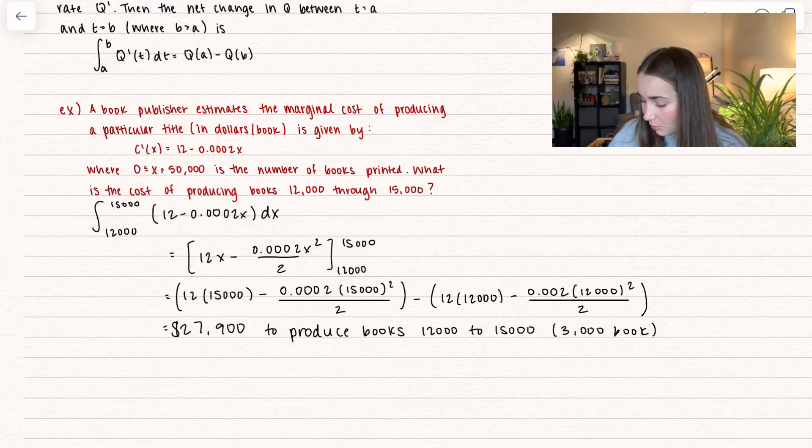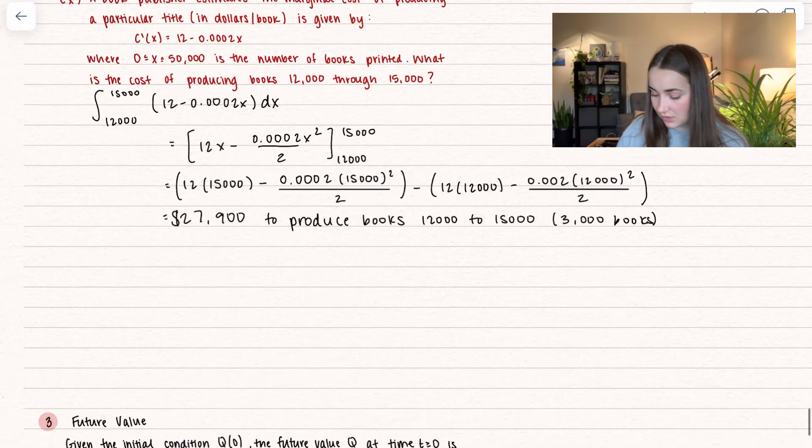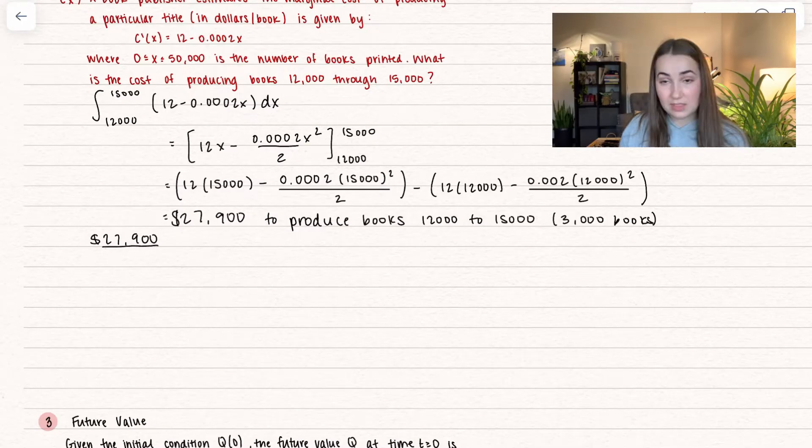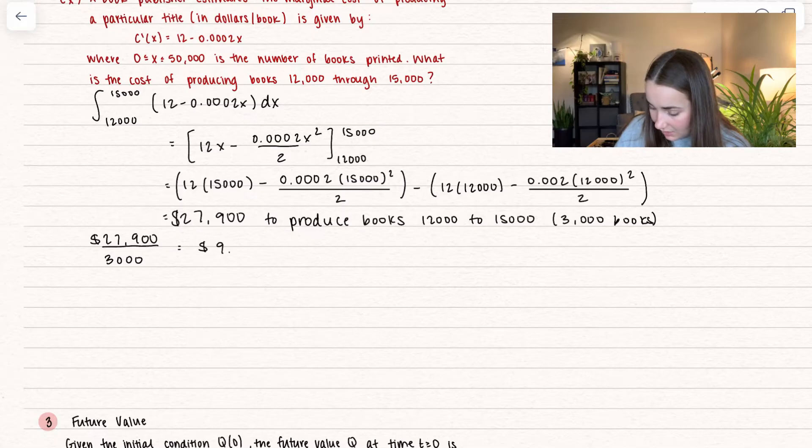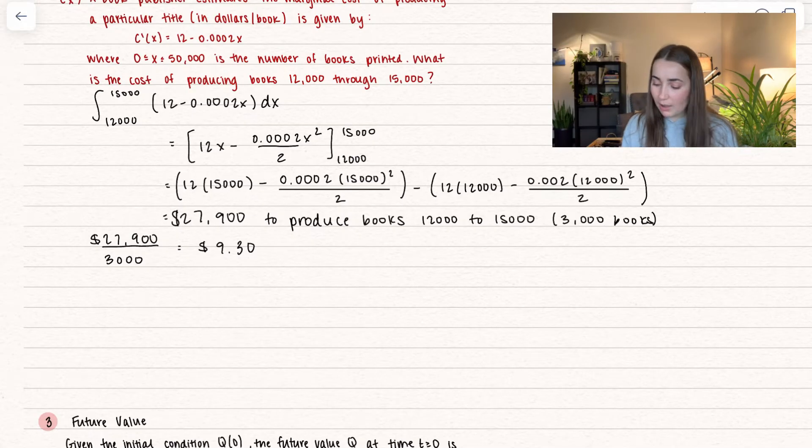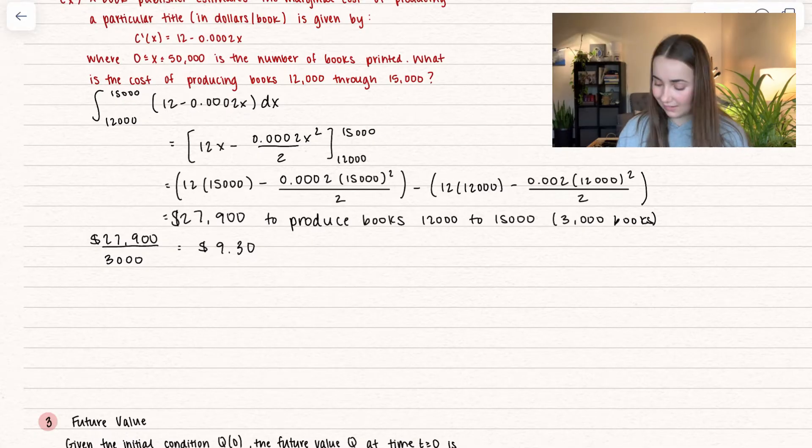Let's talk more about this because I found it really interesting. If it's twenty seven thousand nine hundred dollars to produce three thousand books, I want to see how much it costs to produce each of those books individually. So this is an estimate. If I divide it by three thousand, I end up getting a cost of $9.30.